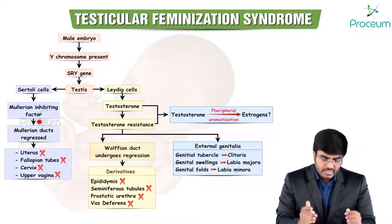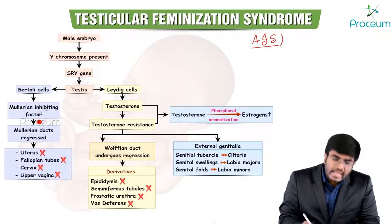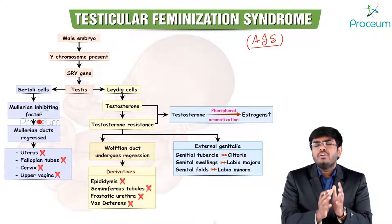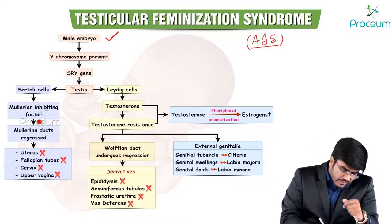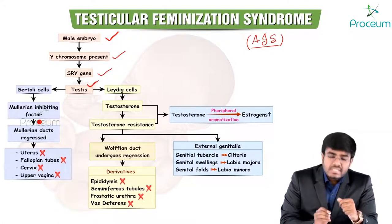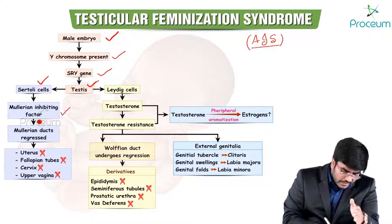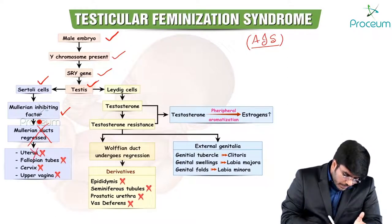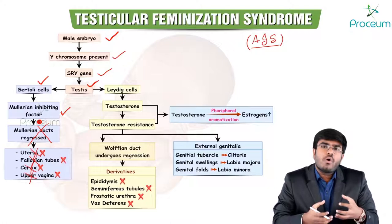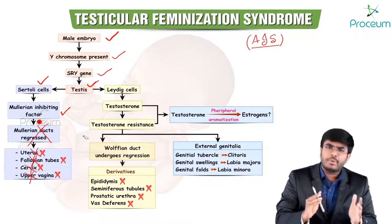Now let's discuss Testicular Feminization Syndrome, also known as Androgen Insensitivity Syndrome (AIS). In this condition, androgens are insensitive or non-functional. In a male embryo with a Y chromosome and SRY gene, testes develop and are functional. Sertoli cells produce MIF normally, causing regression of Müllerian ducts — so uterus, fallopian tubes, cervix, and upper vagina don't form. This half of the pathway is normal for a male embryo.